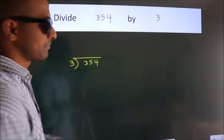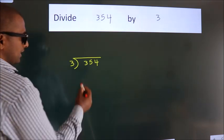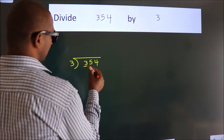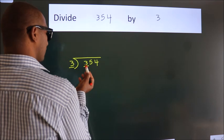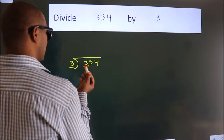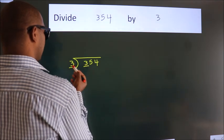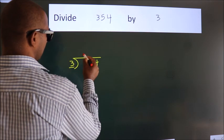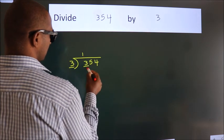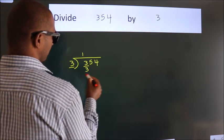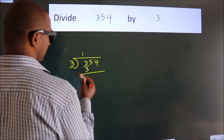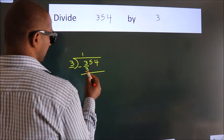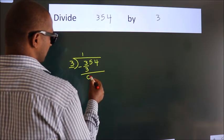Here we have 3, and here 3. When do we get 3? In the 3 table, 3 once is 3. Now we should subtract. We get 0.